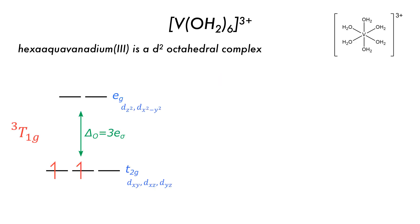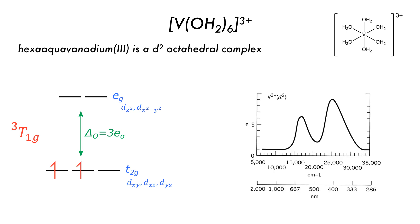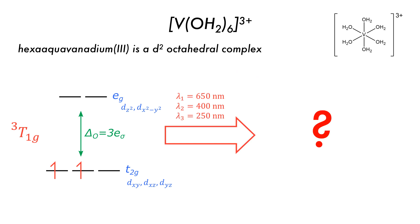Let's try another example: hexa-aqua-vanadium-3+. We still have 6 waters and a 3-plus charge on vanadium, which is D2, with the same molecular orbital diagram as earlier. The ground state configuration has 2 electrons in the T2G orbital, both spin-up due to Hund's rule and the Pauli exclusion principle. In the absorption spectrum, there are two bands — which is probably unexpected, because there is only one gap between the T2G and EG orbitals. There are other orbitals of higher energy, but those transitions would not be so close together. There is also a third transition nearby at 250 nanometers, so there are three transitions in total for this hexa-aqua-vanadium-3 complex.